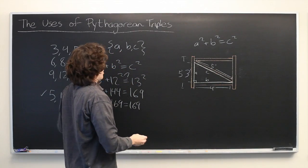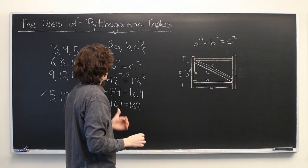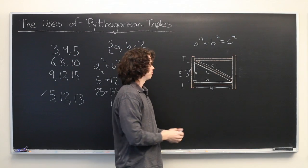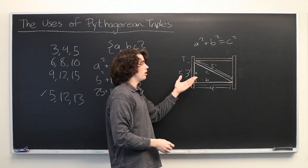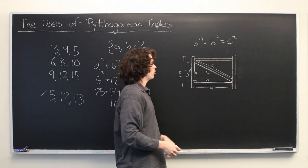Or you could, if you want to make a somewhat longer fence, you could use the 5, 12, 13 triangle. But it's helpful to know ahead of time that you can, in fact, find integers that satisfy this equation.